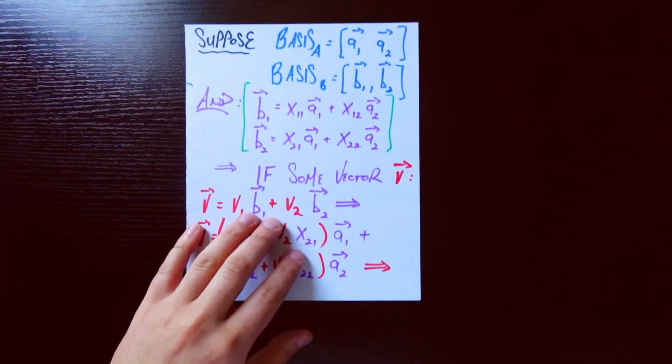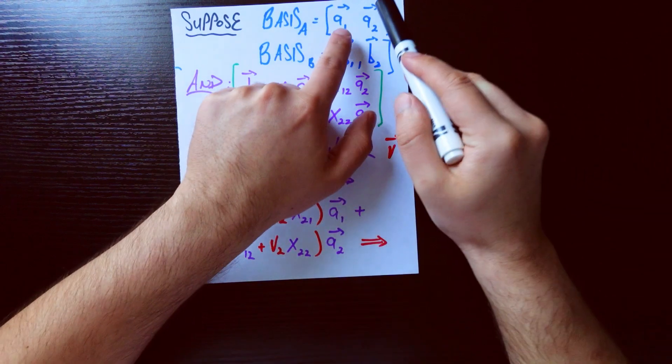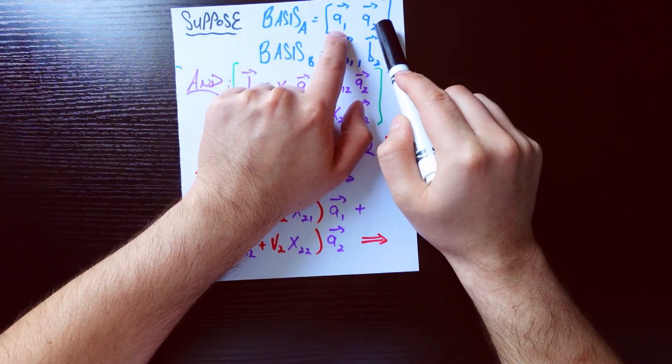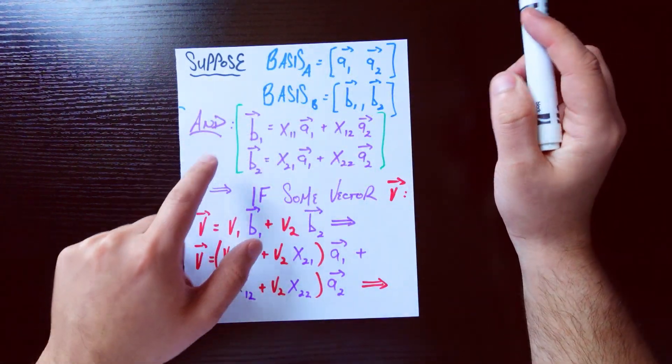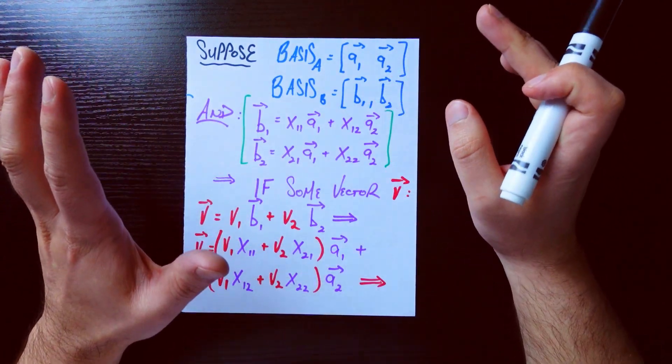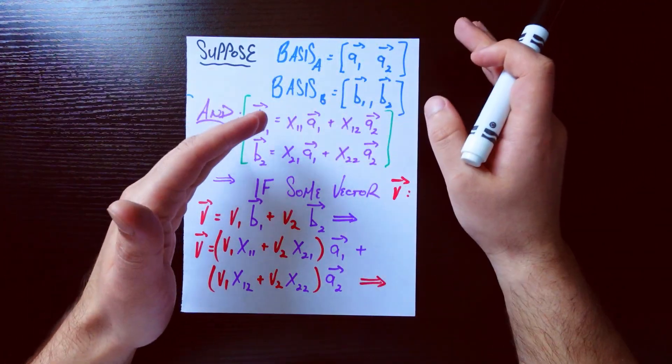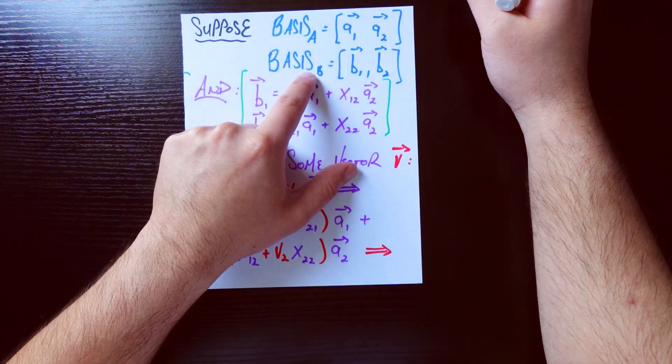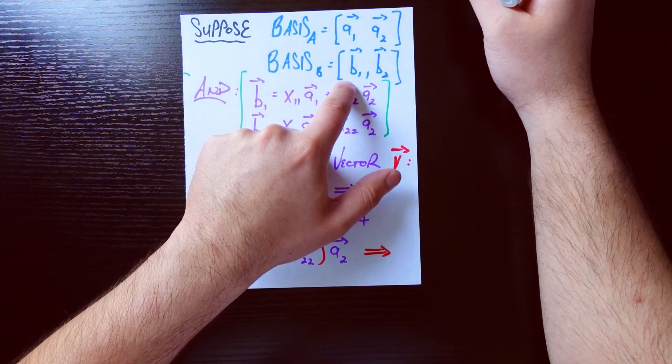So now diving a little bit deeper into the mathematics here, let's suppose that you have basis A is given by these two basis vectors, a1 and a2. I'll be putting these arrows in this video just because it makes a little bit clearer what's a coefficient and what's a vector. And let's say we have some other basis B, which is given by basis vectors b1 and b2.